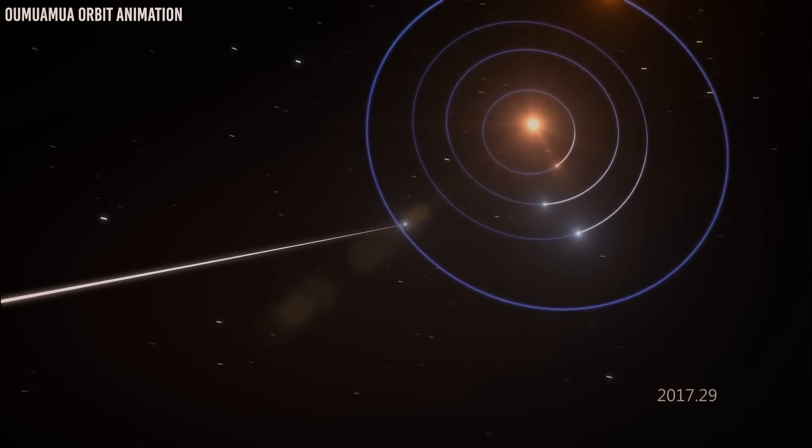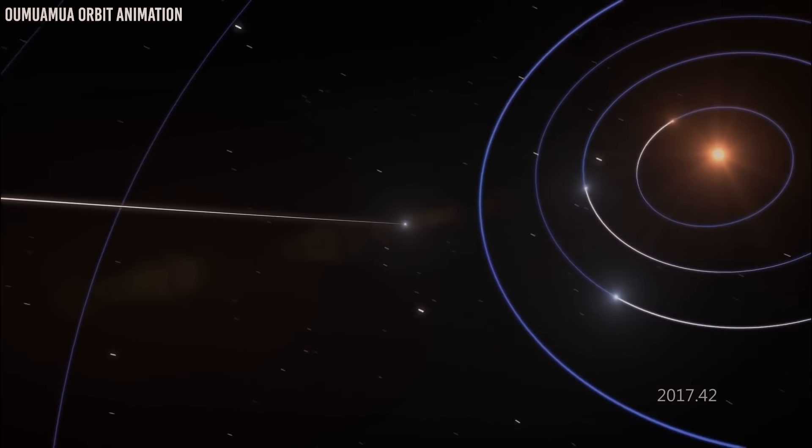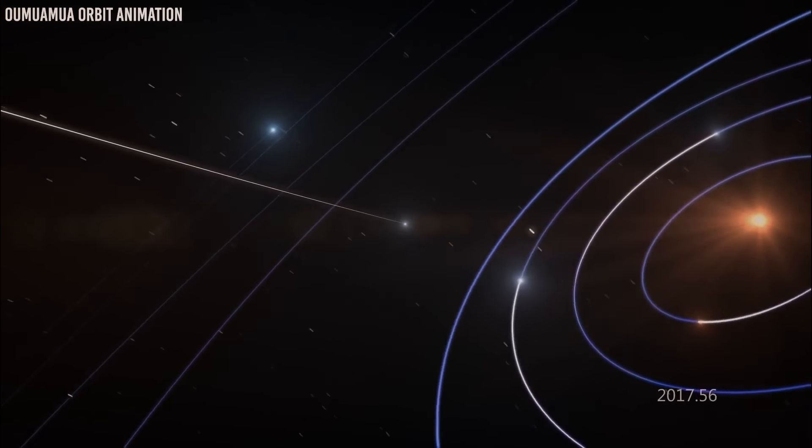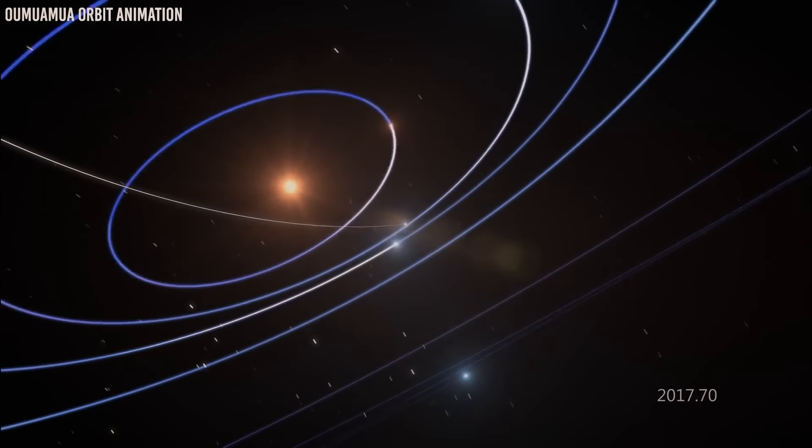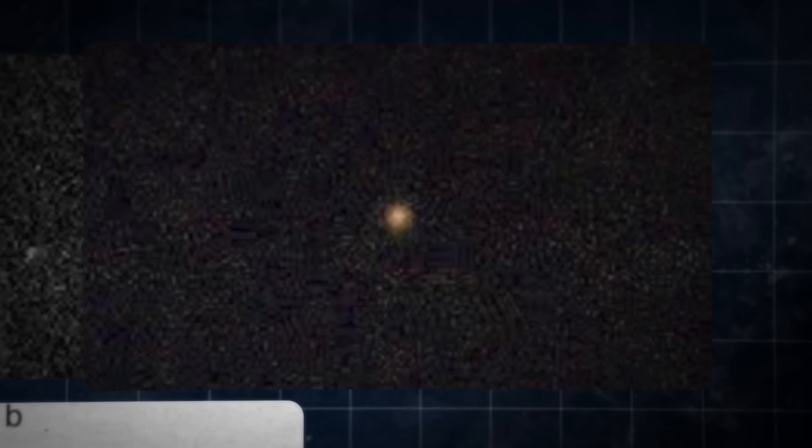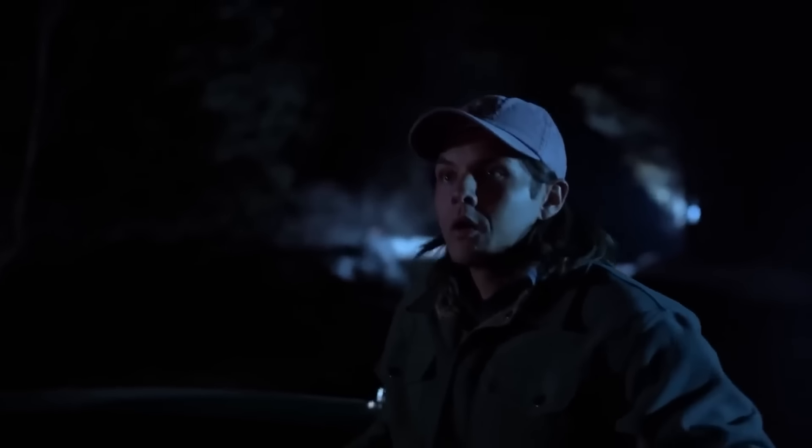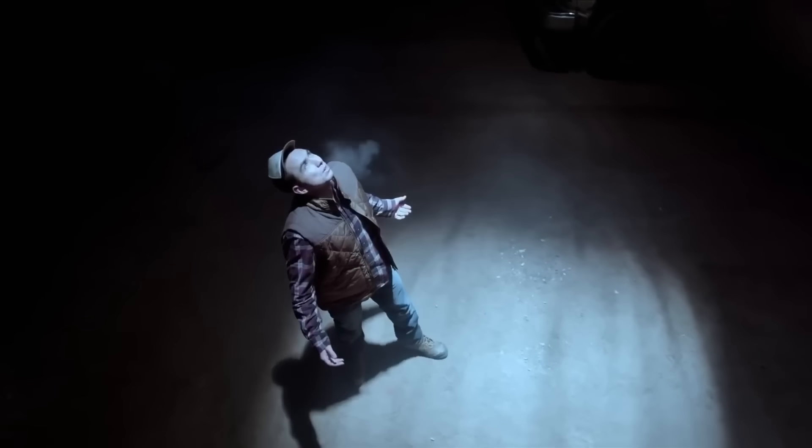When Warrick first observed Oumuamua, it was about 33 million kilometers from Earth and was already heading away from the sun. Oumuamua's name comes from the Hawaiian word for scout. This is because scientists believe that the object can be likened to a scout or messenger that had been sent from the distant past to reach out to humanity.